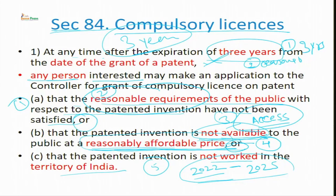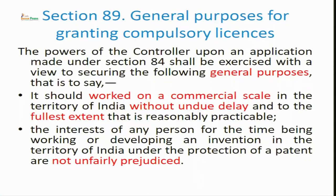Section 84 specifically deals with compulsory licensing in India, and this section 84 is also as per the provisions of the TRIPS agreement. Section 89 specifically deals with the general purposes for which compulsory licensing can be granted. The power of the controller, upon application made under section 84, shall be exercised to secure the following general purposes.